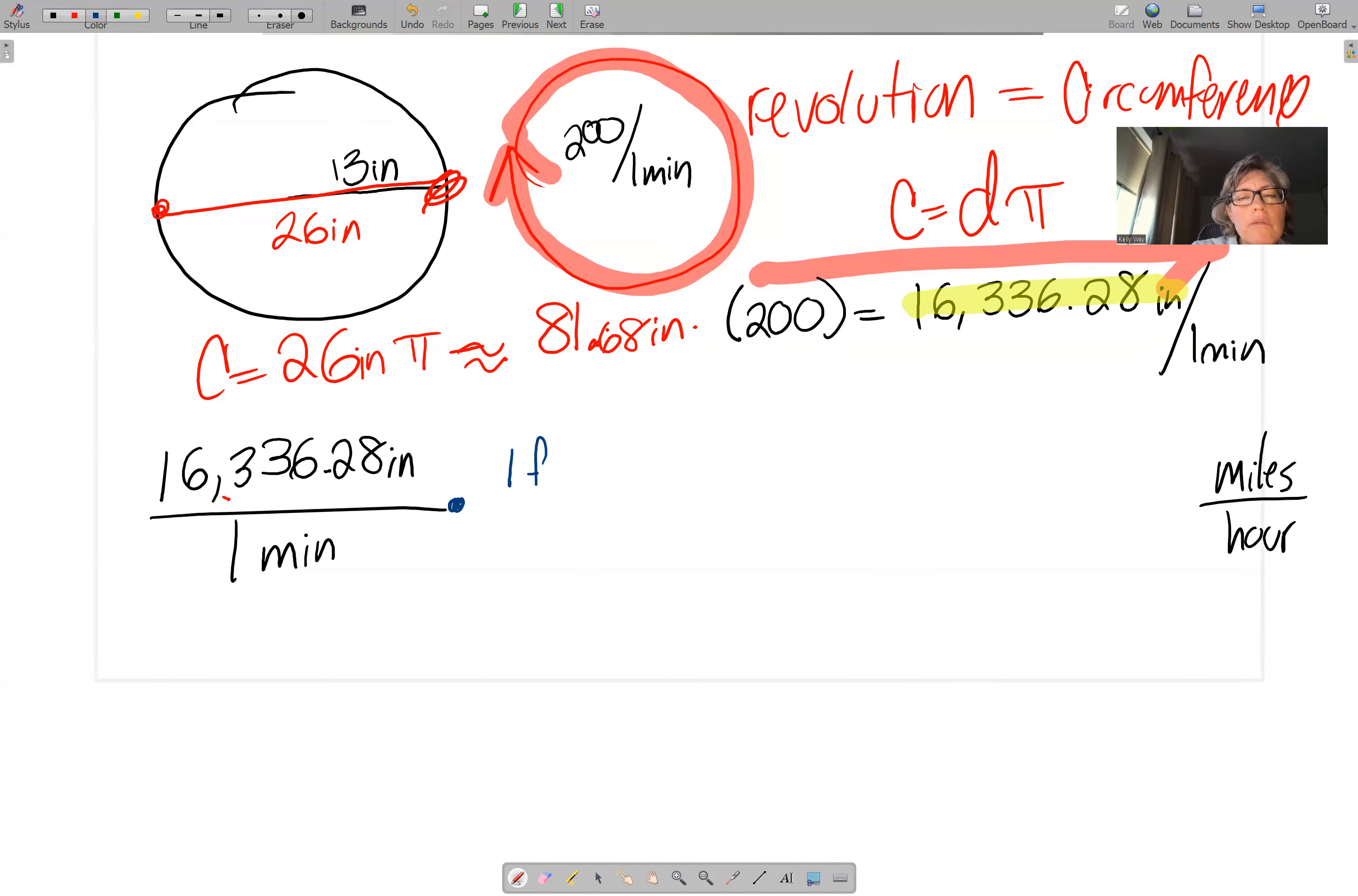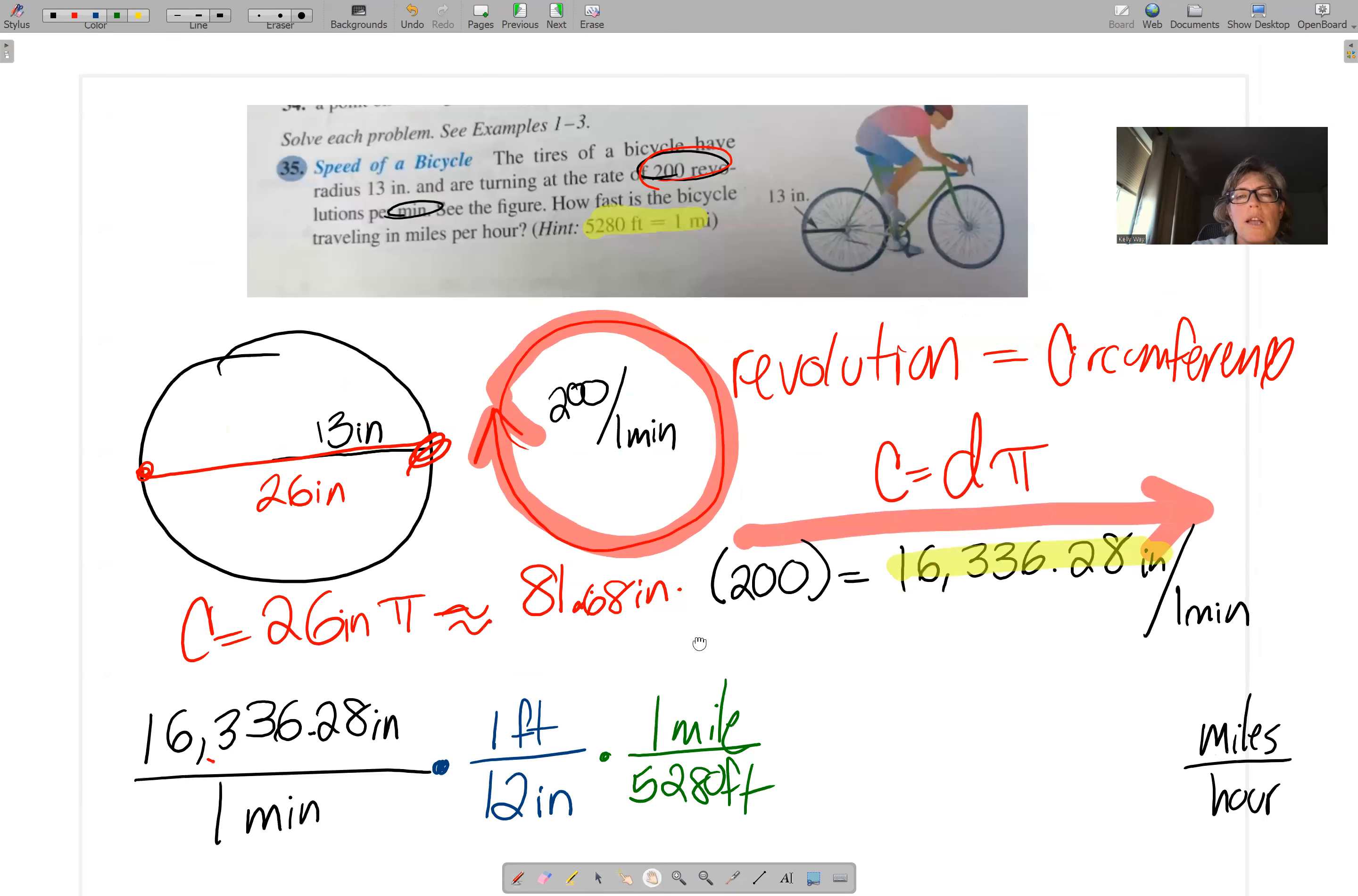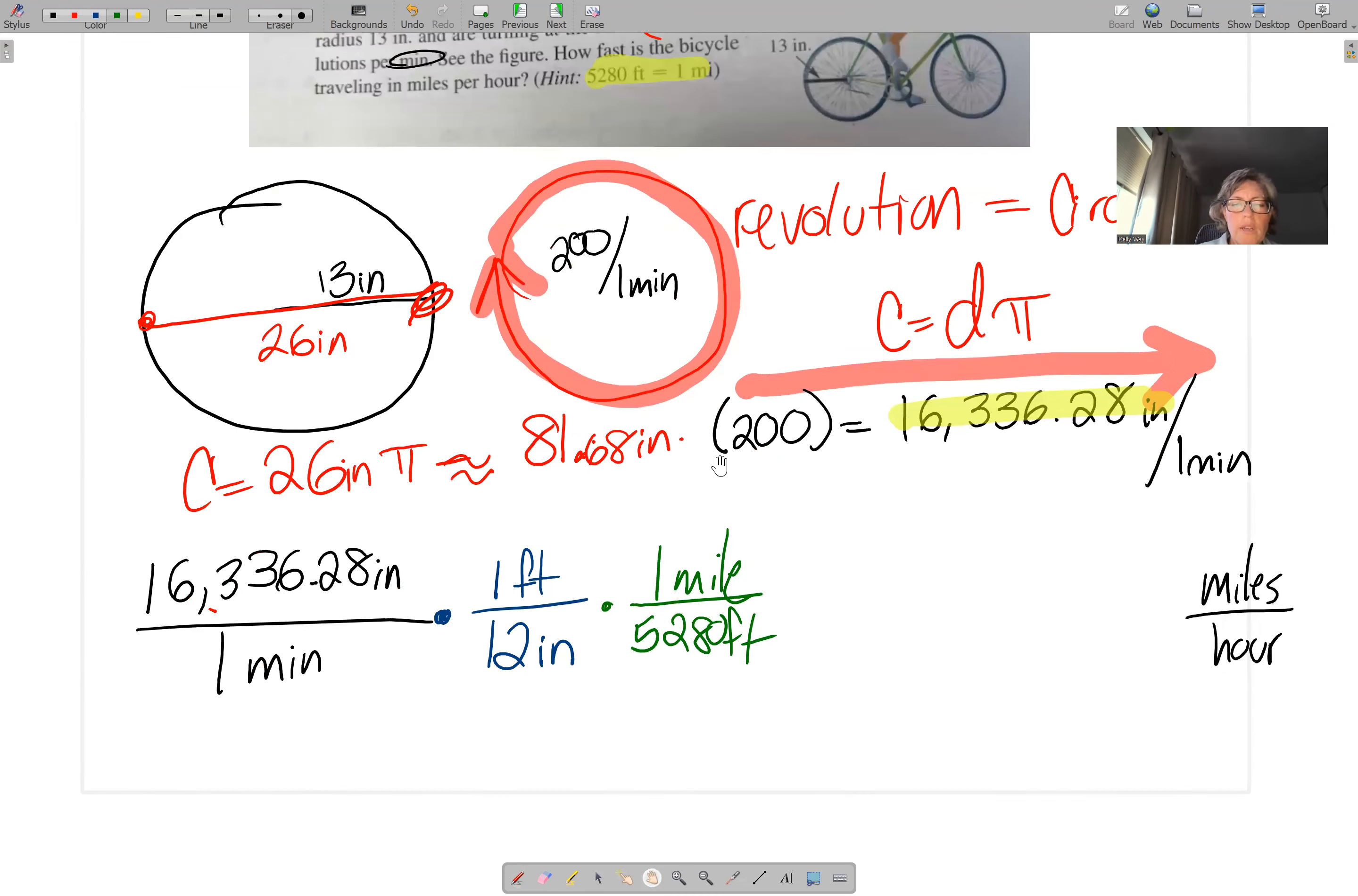So my first conversion is that in one foot, there are 12 inches. That's my first conversion. And in 5,280 feet, there is one mile. I forgot my zero there. Double check that. Yep, 5,280 feet is one mile. Okay, so now I've got miles where it needs to be right there. Now I need to get the minutes converted. So minutes, there is 60 minutes in an hour. One hour. So now I have my hour where it belongs.